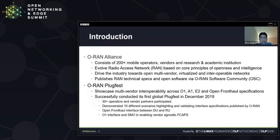In order to showcase the nature of the interfaces being defined by ORAN, including the O1, A1, E2, and Fronthaul specification, and to highlight the multi-vendor interoperability aspect, ORAN conducted its first global plugfest in December of 2019. This was attended by 30-plus operator and vendor partners, and altogether they demonstrated 10 different scenarios and use cases, both highlighted and validated the interface specifications published by ORAN so far.